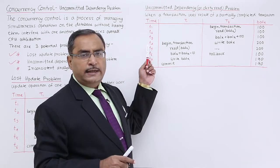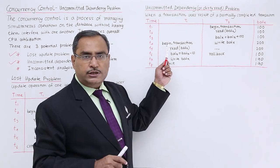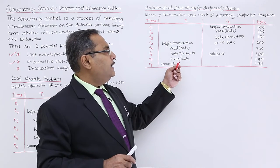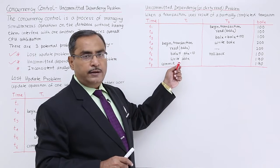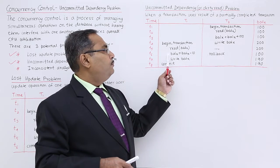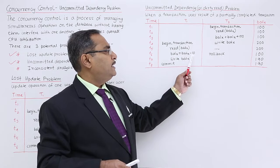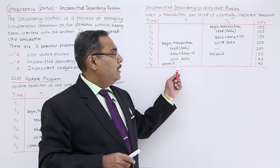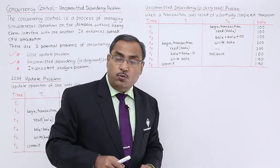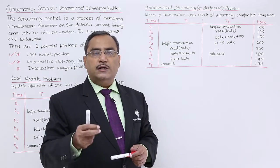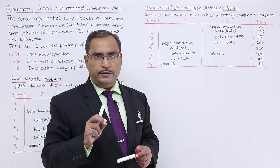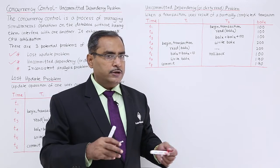In the meantime, from time instant T4, the T1 transaction had already been initiated. Begin transaction, read balance X — now balance X value has been read as 200, because the value was 200 at that point. So it has read 200. Balance X equals balance X minus 10, so internally it has become 190. But due to the rollback occurring at the same instant, the balance X value that was read as 200 has become a dirty read. Dirty read means an inconsistent value — an inconsistent read — that is why it is called a dirty read.